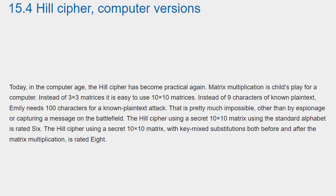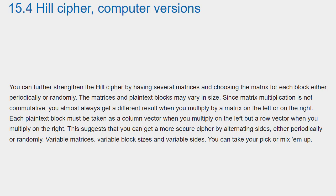The Hill cipher using a secret 10x10 matrix with key mixed substitutions both before and after the matrix multiplication is rated 8. You can further strengthen the Hill cipher by having several matrices and choosing the matrix for each block either periodically or randomly. The matrices and plaintext blocks may vary in size. Since matrix multiplication is not commutative, you almost always get a different result when you multiply by a matrix on the left or on the right. Each plaintext block must be taken as a column vector when you multiply on the left, but a row vector when you multiply on the right. This suggests that you can get a more secure cipher by alternating sides either periodically or randomly — variable matrices, variable block sizes, and variable sides. You can take your pick or mix them up.